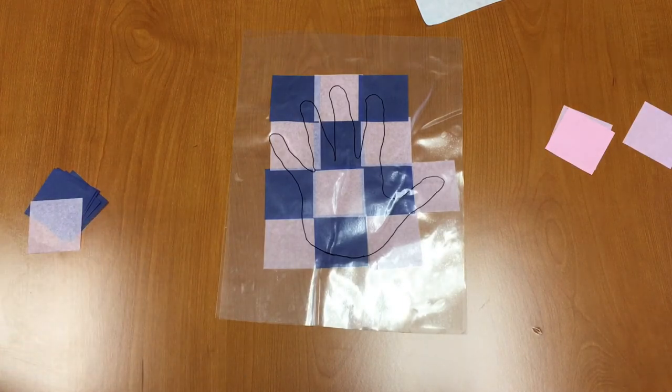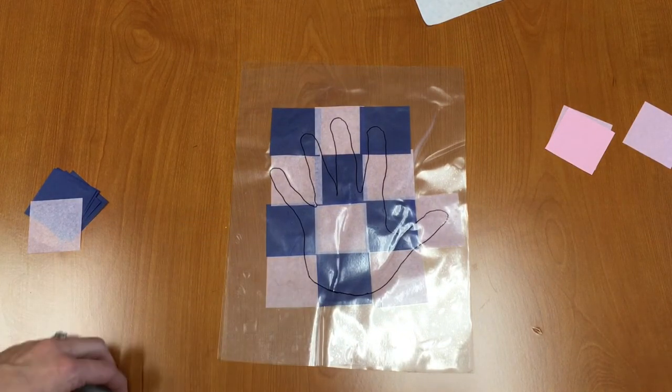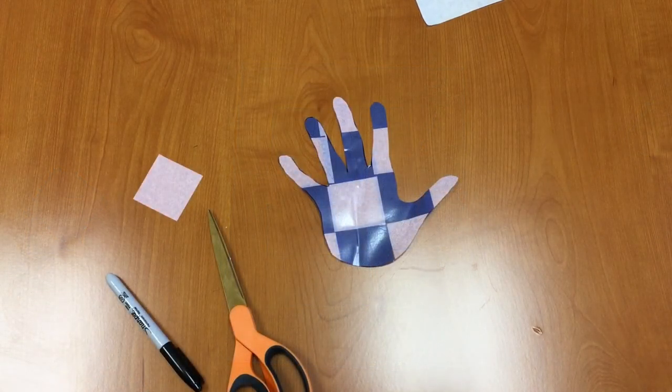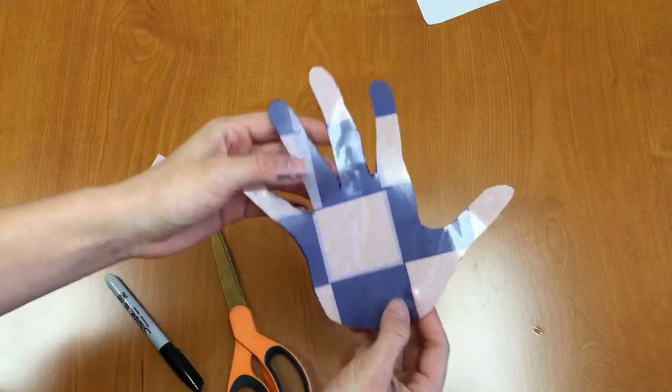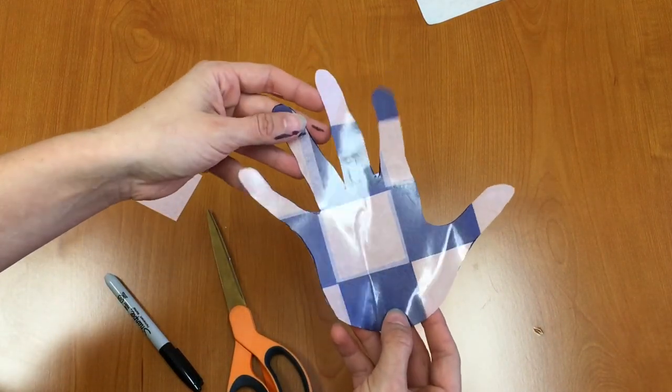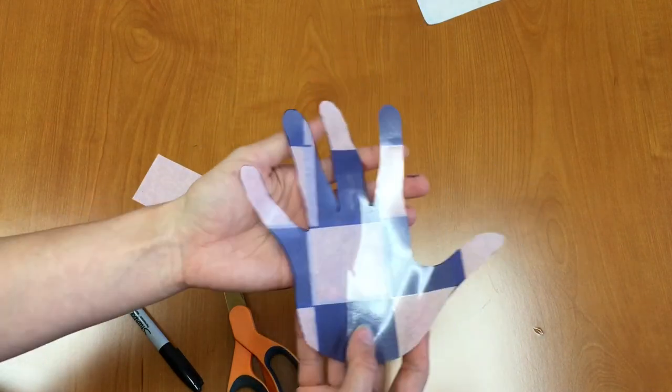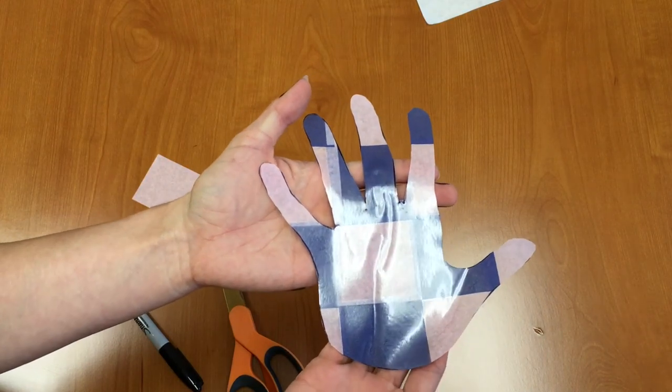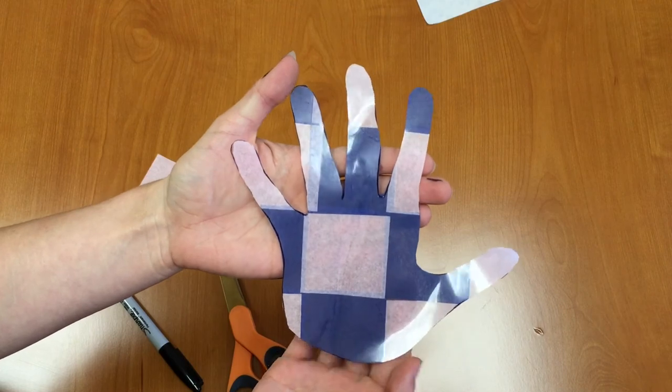Great and now I have my handprint but we need to cut it out now. So I'm going to cut this out and I'll be right back to show you my results. All right now I have my handprint cut out and it doesn't look like it when it's on the table but if you hold it up to a window you'll be able to see the sun shining through your tissue paper to make your nice sun catcher. So there you have it my friends that's your sun catcher handprint and you have just completed it. Great job everyone.